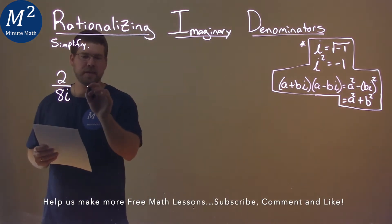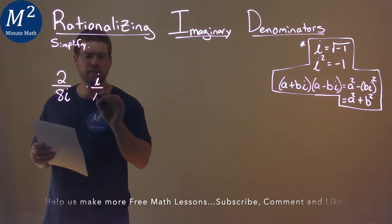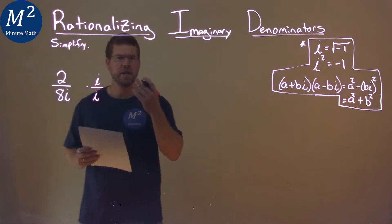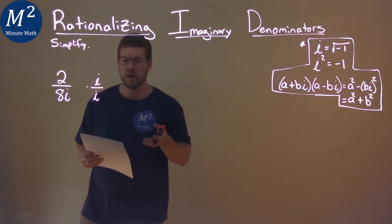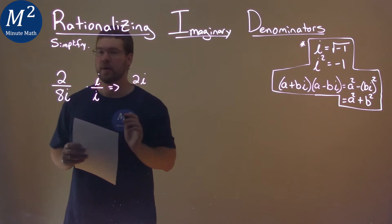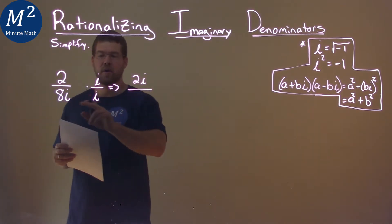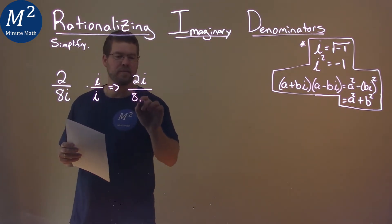What I want to do first is take this 2 over 8i and multiply it by i over i. And in doing so, that's really just multiplying by 1. But what happens? 2 times i is 2i, multiply across the numerator, and denominator 8 times i, or 8i times i is 8i squared.